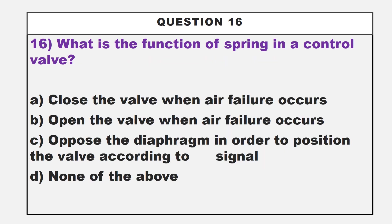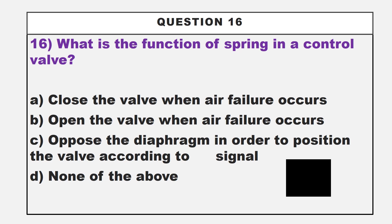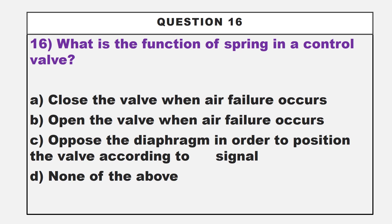The next question is: what is the function of the spring in a control valve? Option A: close the valve when air failure occurs. Option B: open the valve when air failure occurs. Option C: oppose the diaphragm in order to position the valve according to the signal. Option D: none of the above. The correct answer is option C, oppose the diaphragm in order to position the valve according to the signal.